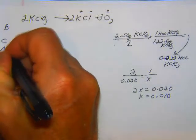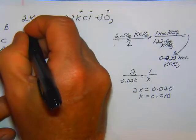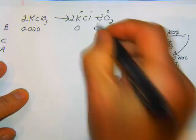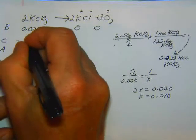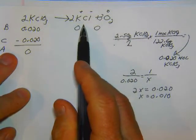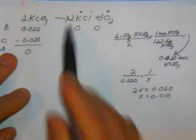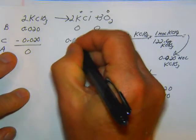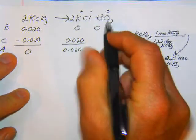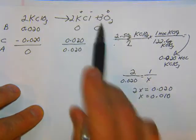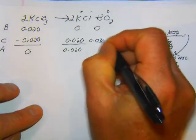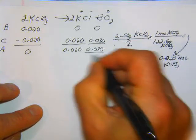Alright, so now we can go ahead and do the before, change, and after. So b, c, a, and before we know how much we have. We have 0.020. We don't have any of this at the before. So we're using up all of this, 0.020. So I'm just going to go ahead and do the after. Now, how much of this are we making? Well, we have the same coefficient, we've got a 2 here and a 2 there. So those two values are going to be equal, 0.020. So we've got that. And then oxygen, we've actually got a coefficient of 3, so it's 3 times that amount. So we've got 0.030. So there's our moles of O2.